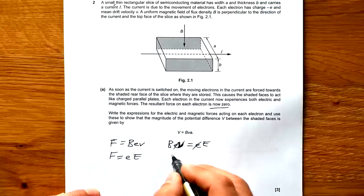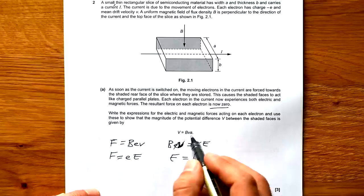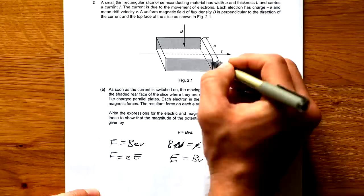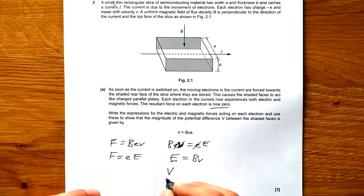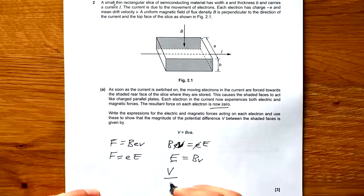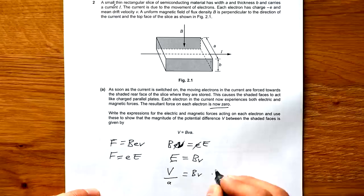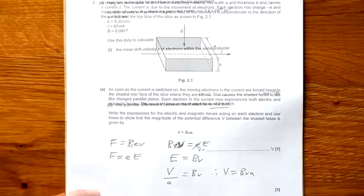So if the force is now zero, we can say that Bev equals EE. That cancels. So we have E equals BV. We're almost there. We just need to get rid of the electric field. Now we know an electric field setup between two plates is equal to the PD across the two plates divided by the distance between the plates. In this case, it's going to be A. Therefore, voltage PD is equal to BVA.